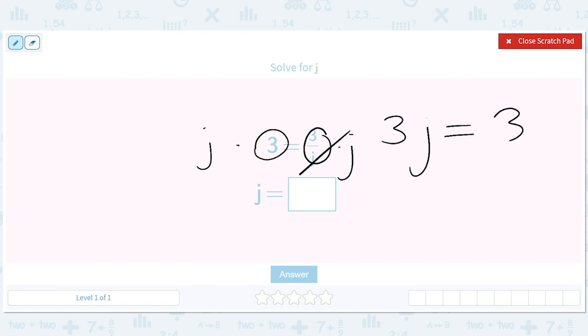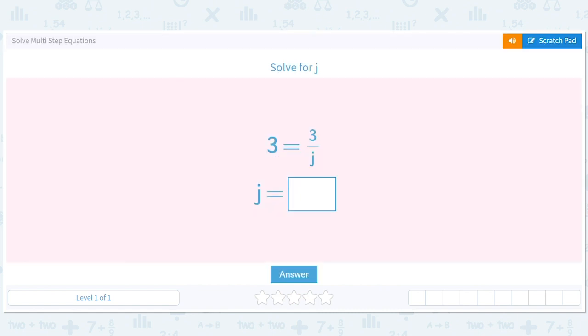And then the second step is to divide both sides by 3. And you get j equals 1. You could probably have guessed 1, right? If you put in a 1, what's 3 divided by 1? 3. And that makes the equation work.